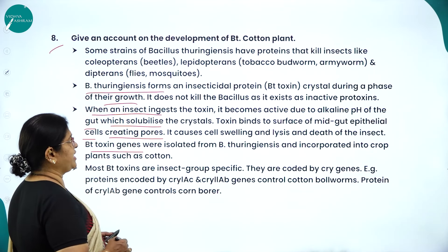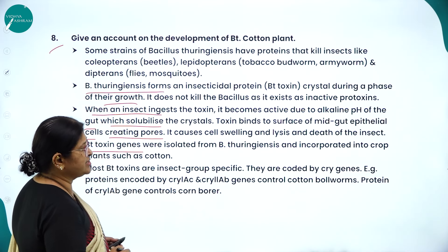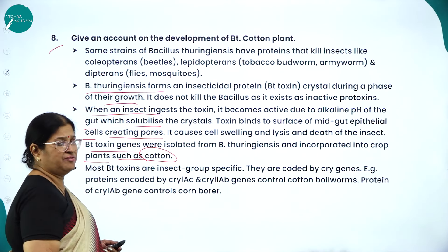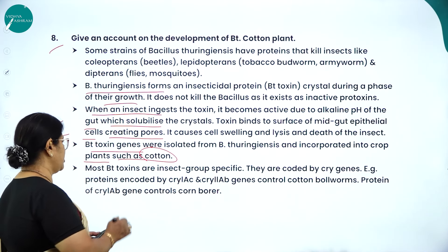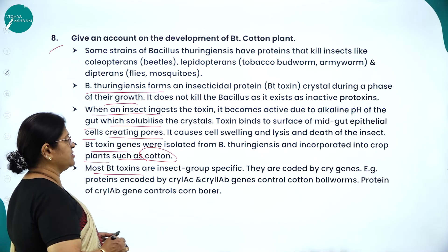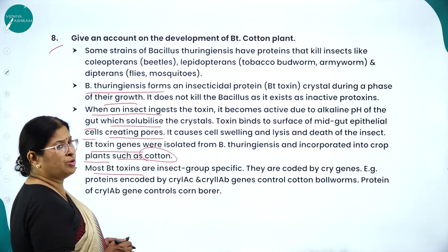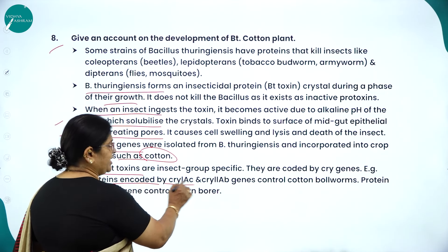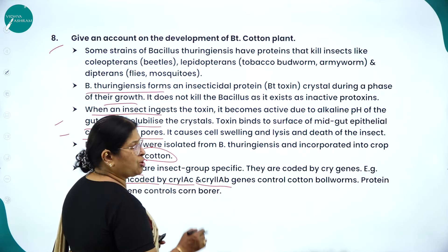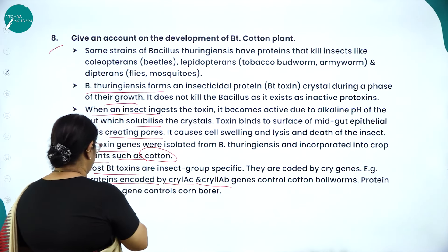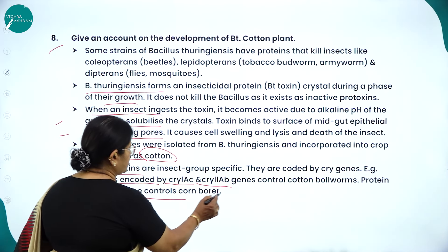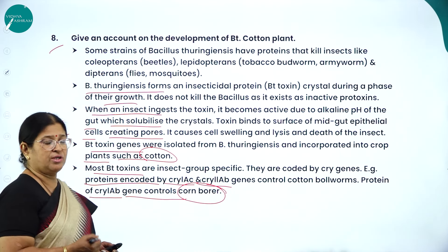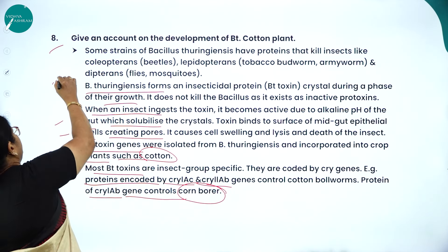When an insect ingests the toxin, it becomes active due to the alkaline pH of the gut, which solubilizes the crystals. The toxin binds to the surface of midgut epithelial cells, creating pores, causing cell swelling, lysis, and death of the insect. BT toxin genes were isolated from Bacillus thuringiensis and incorporated into cotton. Most BT toxins are insect-group specific, coded by cry genes — for example, cry1ac and cry2ab control cotton bollworms, while cry1ab controls corn borer.